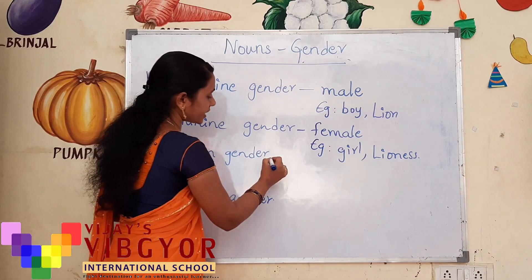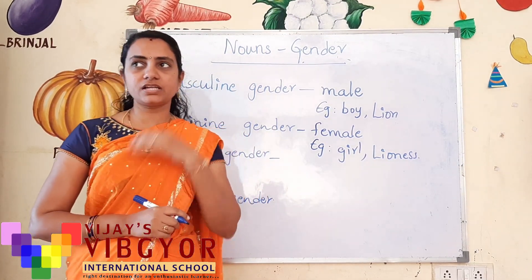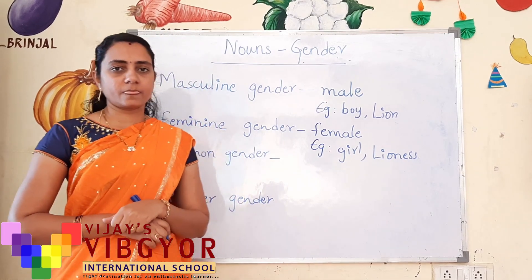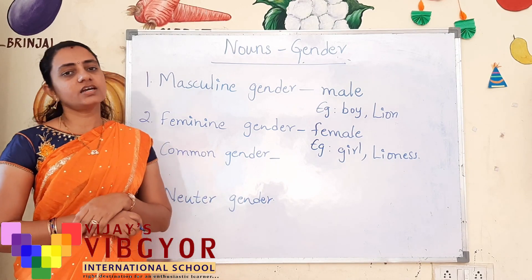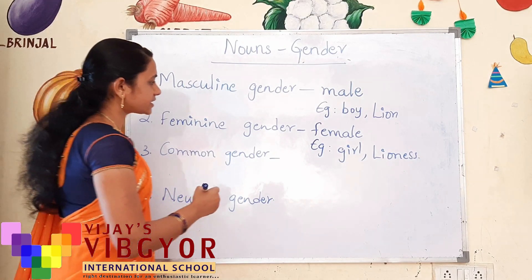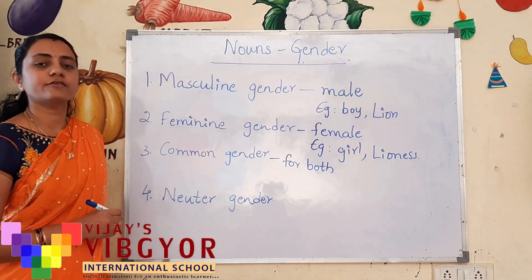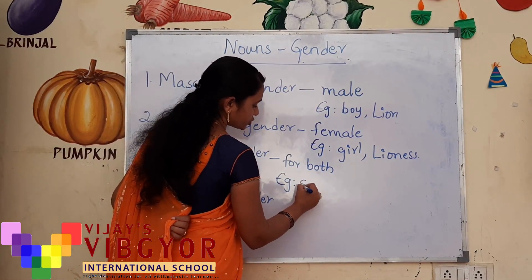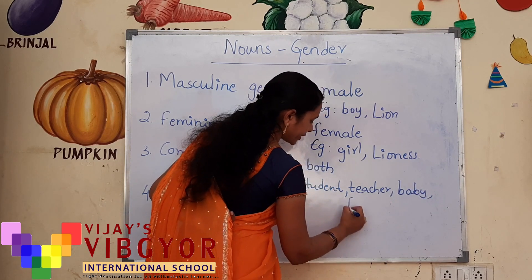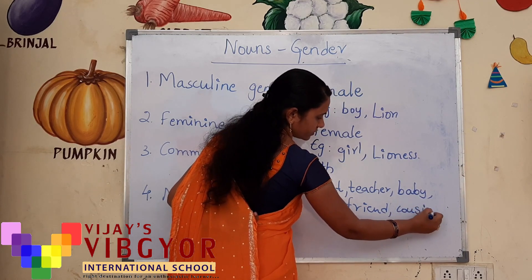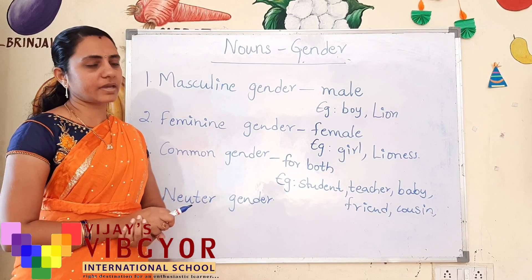Next, common gender. Some words can be used for both males and females. For example: teacher, student, pupil, person, thief, neighbor, cousin — there are several other words like this which we can use for both masculine and feminine. Common gender is used for both male and female. Examples are: student, teacher, baby, friend, cousin, neighbor, and principal.